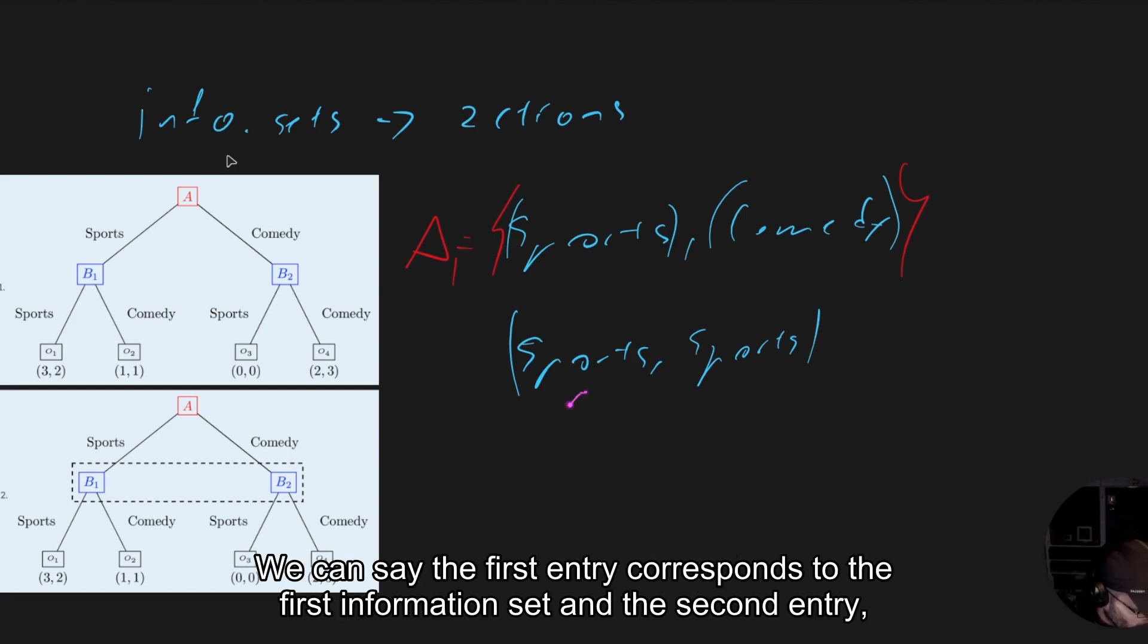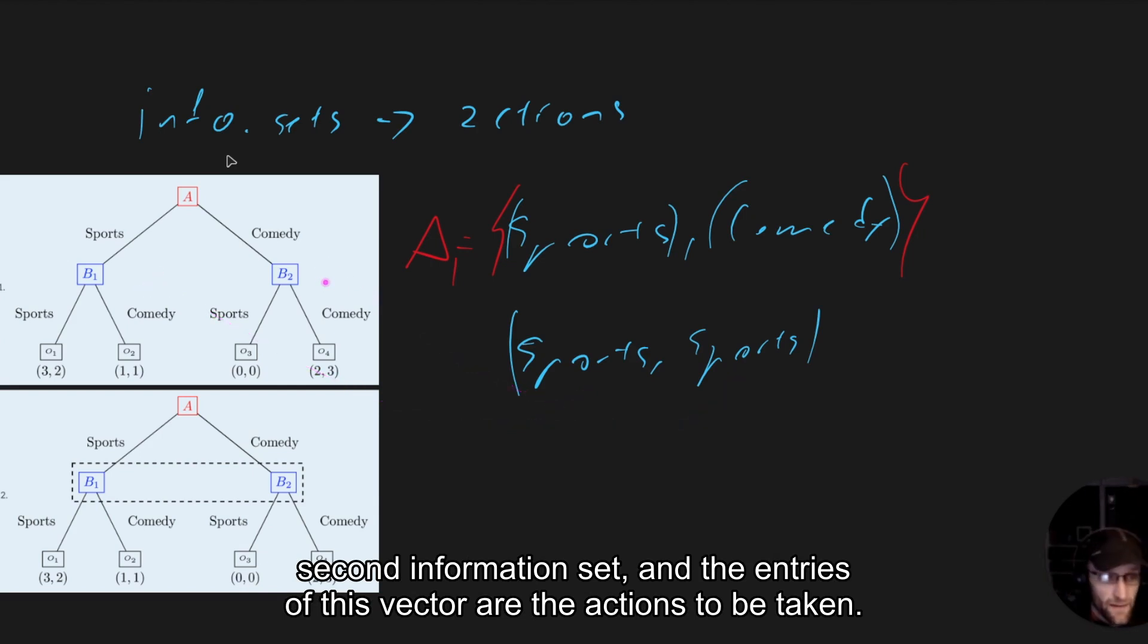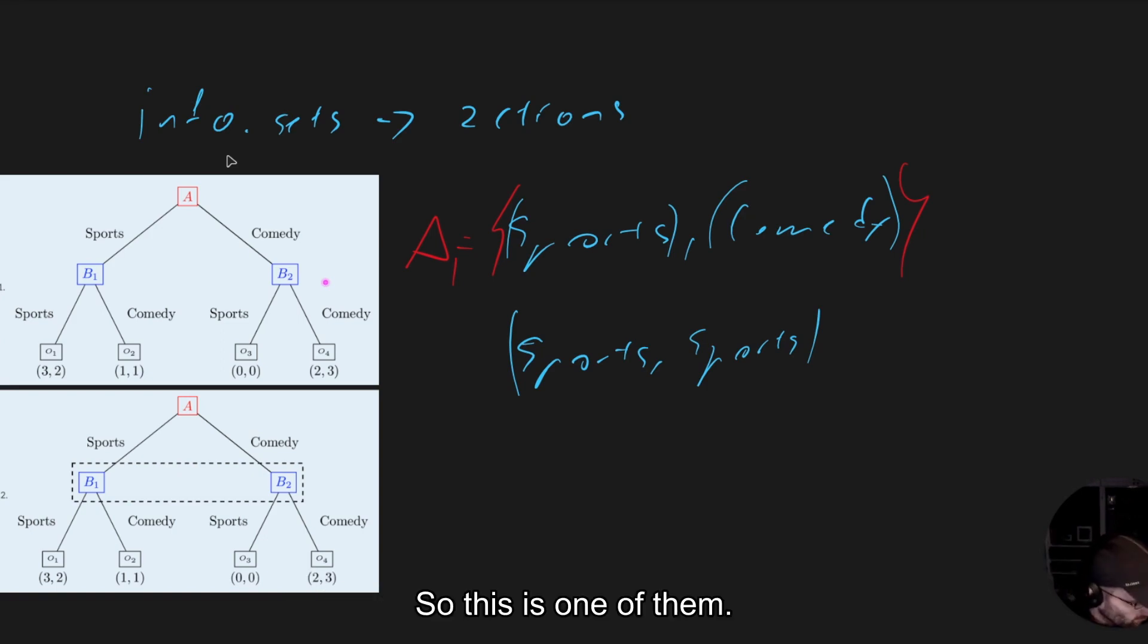A single strategy for Bob is a vector indexed by the information set. We can say the first entry corresponds to the first information set and the second entry, second information set. And the entries of that vector are the actions to be taken. So this is one of them.